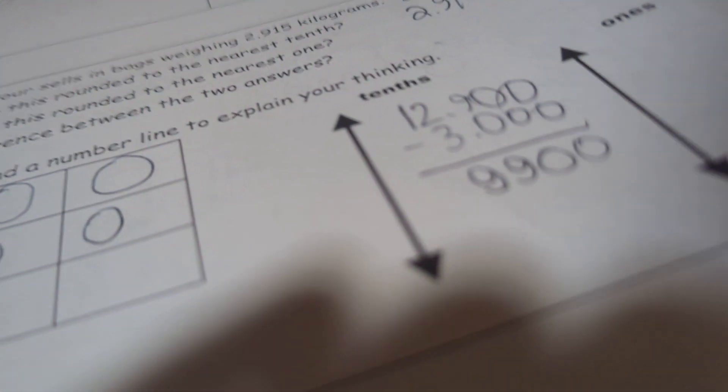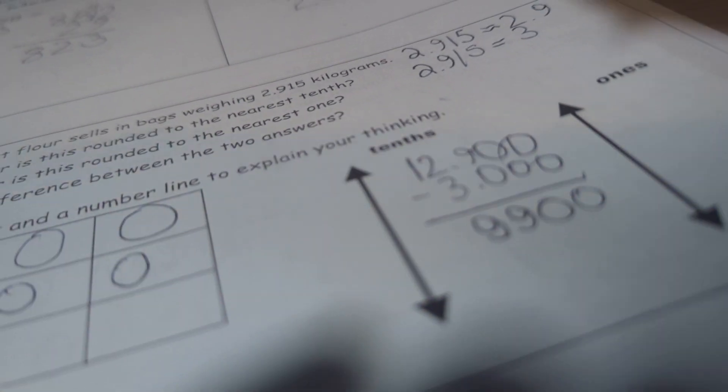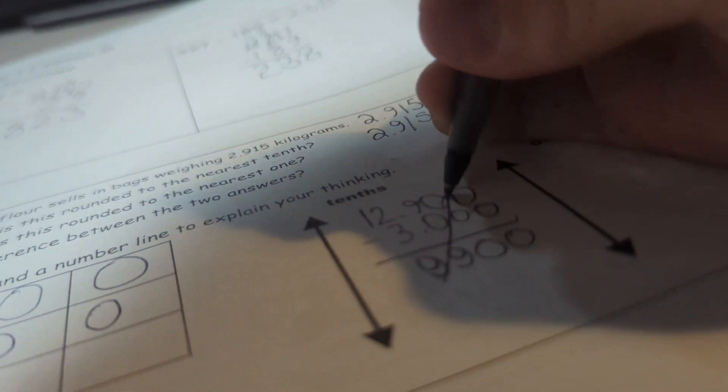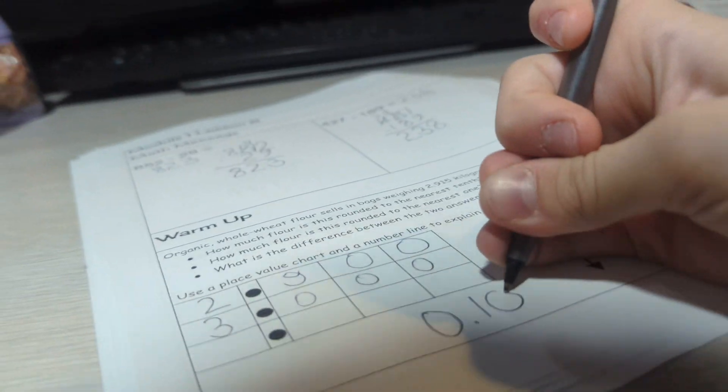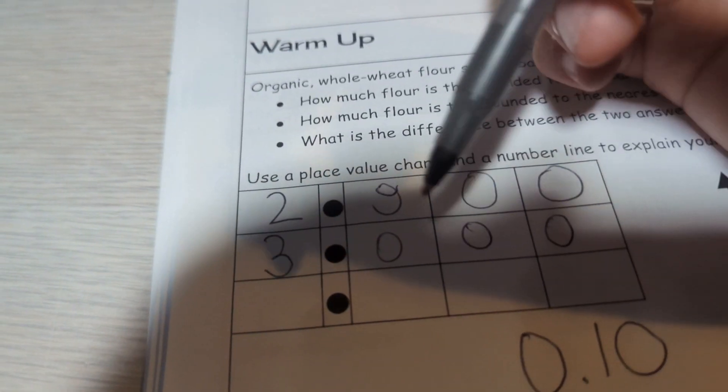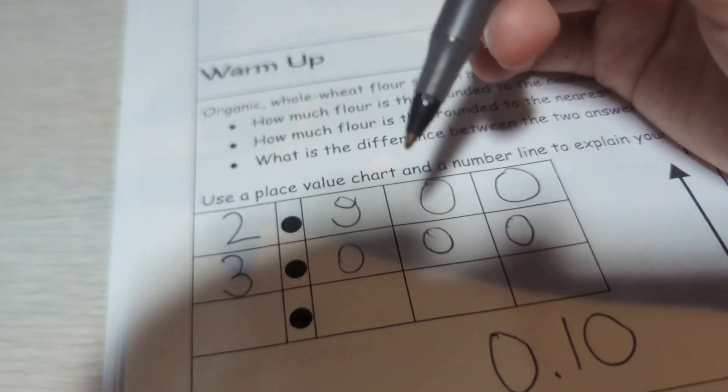So 9 would go here. Wait, that's not it. That has to equal 10, 10 hundredths or one tenth. You know why? Because both of the answers give 10, 10 hundredths.